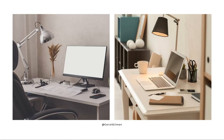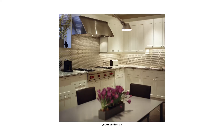Task lighting can be very focused or more spread out. A focused example would be a table lamp on a home office desk with a shade that directs light down onto your paperwork so you can see it clearly. On the other hand, under-cabinet lighting in a kitchen is hidden, but the light it provides spreads across the backsplash and counters, offering both overall illumination and task lighting that helps you see while chopping vegetables or preparing a meal.